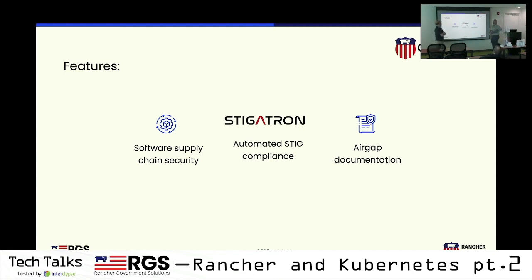Number two — Stigatron, which is around STIG observability. Right now, STIG observability covers the Kubernetes cluster, RKE2, and Rancher itself — not yet in your purview. But eventually we'll open it up to other STIGs, such as FluentD or application STIGs, with automated reporting back to RMF, ACAS, or whatever systems you're using. The third is the Docatron AirGap — an offline version of all the docs for all Rancher products, including Kubernetes documentation itself.